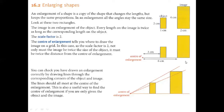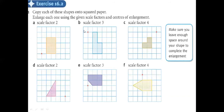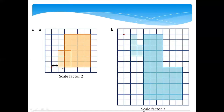Let's start Question 1. The question gives us a shape and says the scale factor is two — so you make it double. Here, this shape covers two boxes from the base, so it will cover four boxes when enlarged. From top to bottom it is three boxes, so it will cover six boxes.